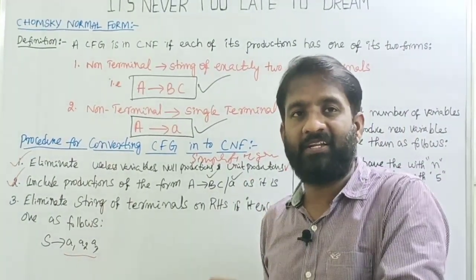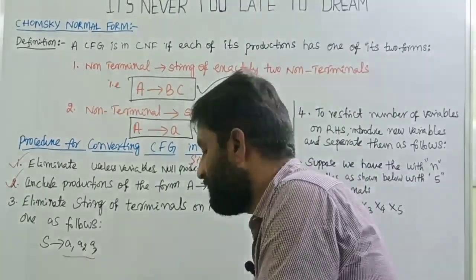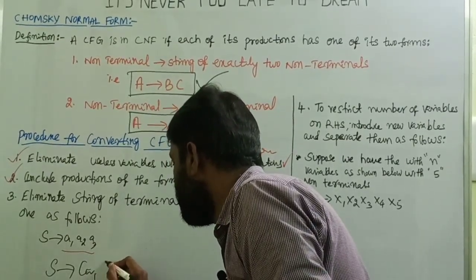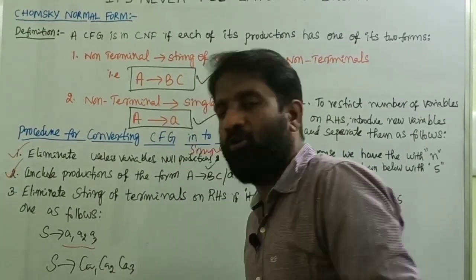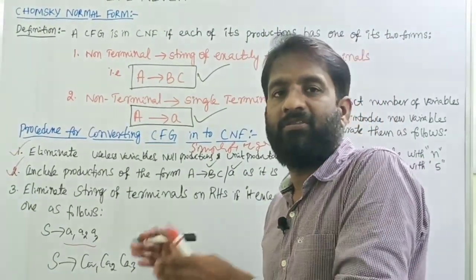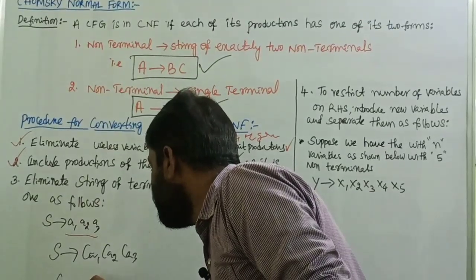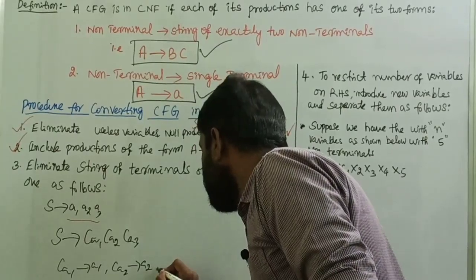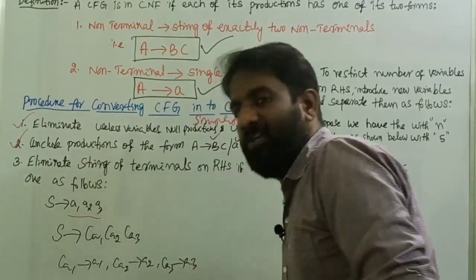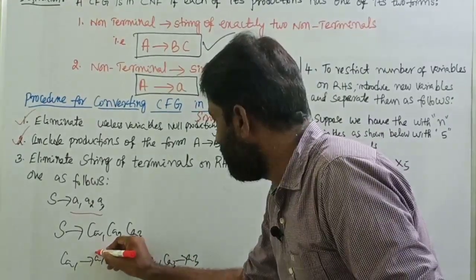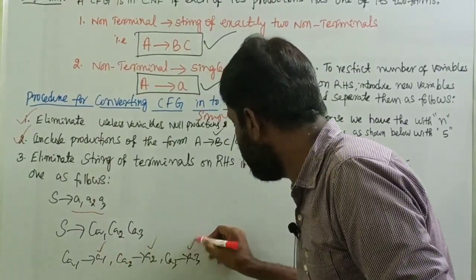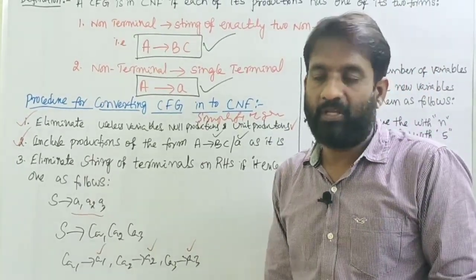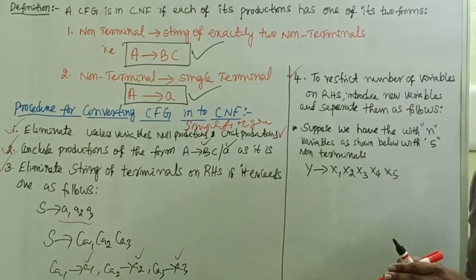The third step: if the RHS part has terminals like A1, A2, A3 — where it should have only a single terminal but multiple terminals are present — you can introduce new non-terminals. For example, S → CA1 CA2 CA3, introducing three non-terminals for three terminals, so that CA1 → A1, CA2 → A2, CA3 → A3. You observe that the right side of each production then has only a single terminal. This is how we convert when the RHS has more than one terminal.